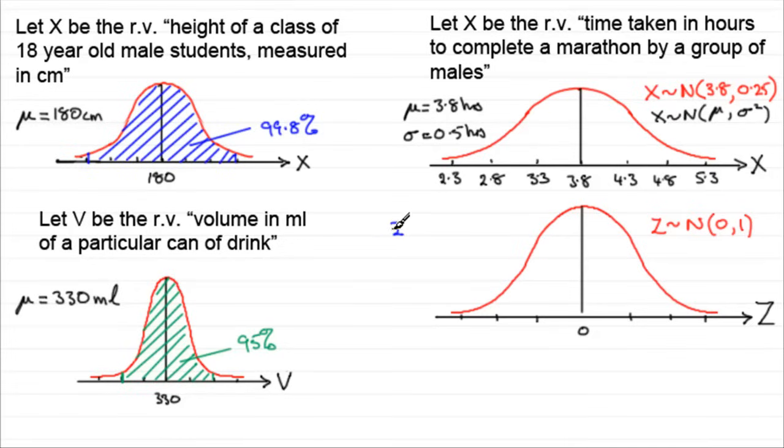is z equals the observed value up here, which is going to be a little x, minus the mean mu, all divided by the standard deviation, sigma.